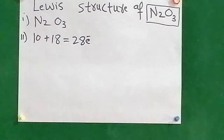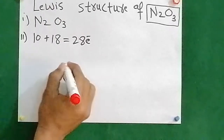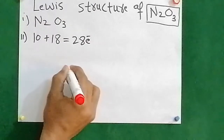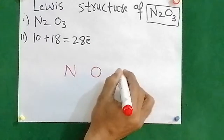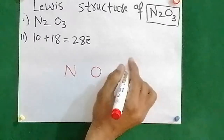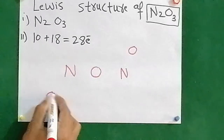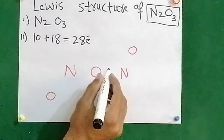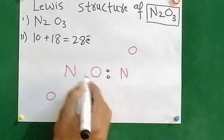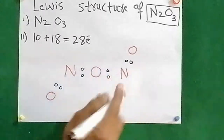First of all, I am going to write its structure, which is: nitrogen, oxygen, nitrogen, oxygen, and oxygen. Now we have two dots between every atom — nitrogen, oxygen, nitrogen, oxygen, nitrogen, oxygen, nitrogen, oxygen.